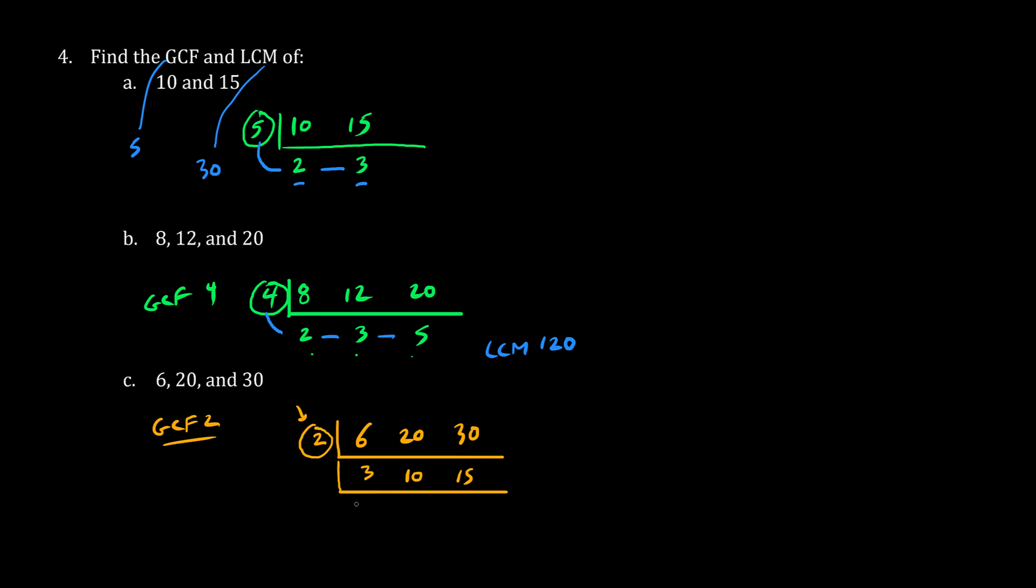However, for the LCM, we can keep on going. What number fits into 10 and 15? The number is 5. So 5 times 2 is 10, 5 times 3 is 15. As long as there's two numbers in which you can pull out a factor, you keep on going. This 3 is the number that's left out, so we just drop it down.